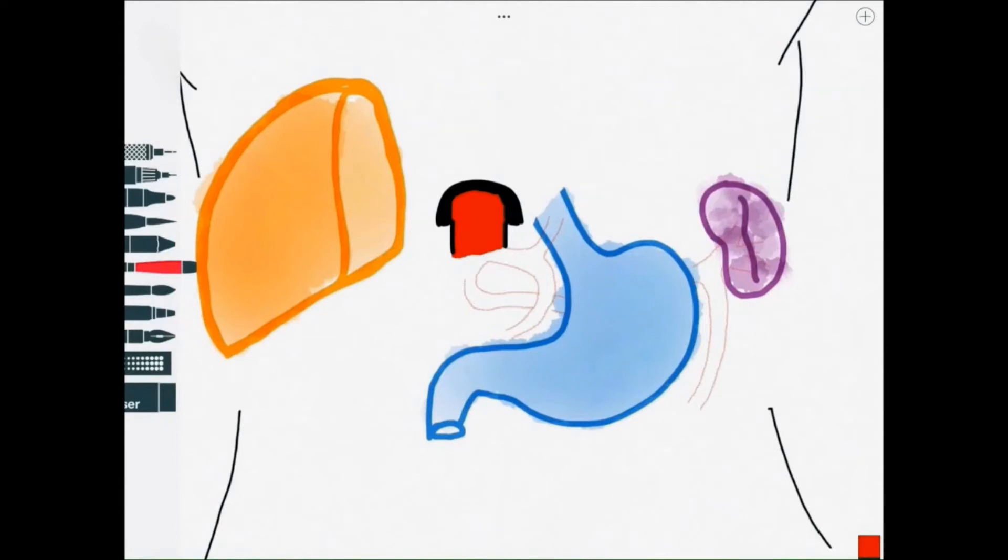So I've made the other arteries fainter in this image so we can focus. This is the common hepatic artery here. It heads right towards the liver to supply it with oxygen and nutrients.